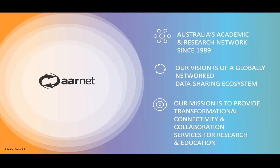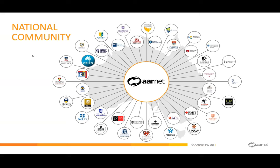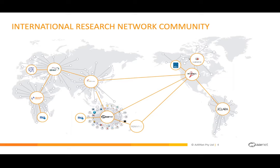Our national community includes all the universities, research facilities, some government agencies, and schools and MRIs connected on our backbone. We also have an international research community linked to Internet2, CANARIE in Canada, GÉANT in Europe, connecting instruments like CERN, SKA, REANNZ in New Zealand, and SKA in South Africa. It's a global-reaching network and we collaborate with other NRENs. If you need to transfer data or collaborate with spaces in different parts of the globe within the research community, we can help.